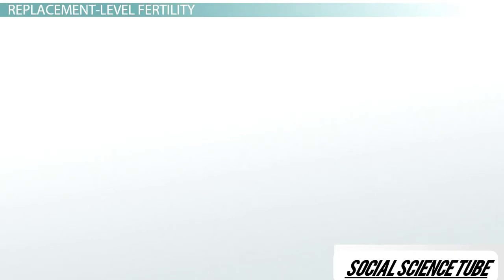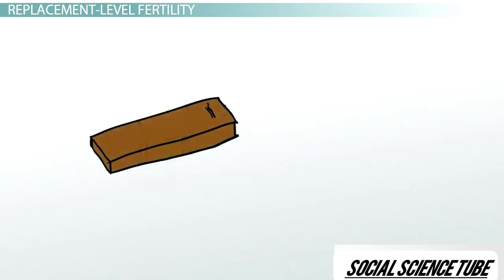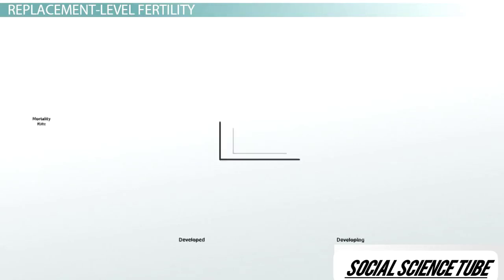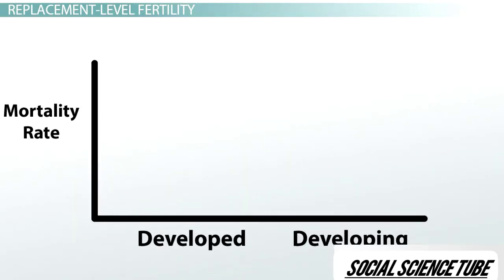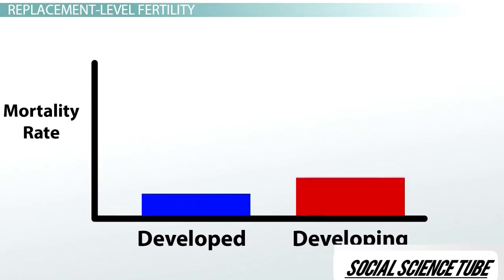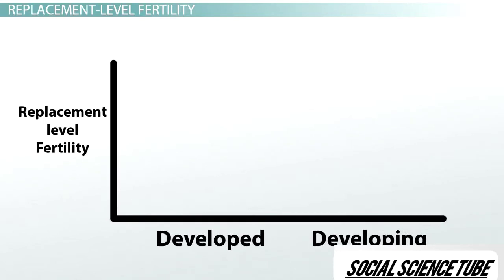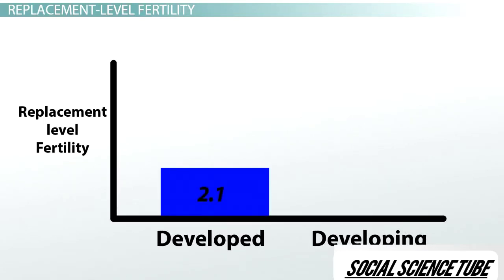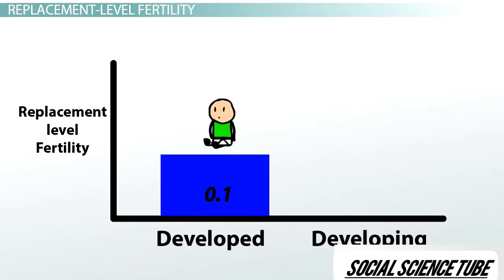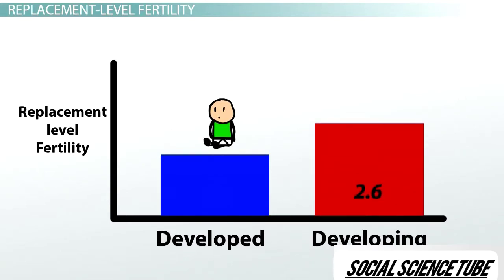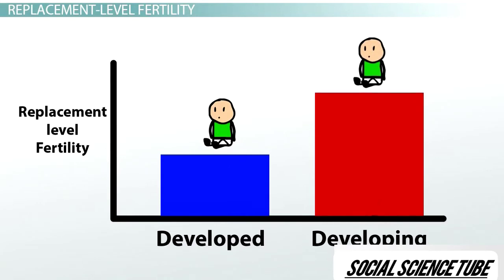Of course, the world is not ideal, and not all offspring that are born will survive to reproductive age and replace their parents. The replacement-level fertility rate is greatly impacted by the infant mortality rate, which is much higher in developing countries. On average, the replacement-level fertility rate is around 2.1 in developed countries — 2 children to replace the parents plus an additional 0.1 for the risk of a child dying before reproductive age. For developing countries, this number is slightly higher at around 2.6, with an additional 0.6 due to the higher risk of infant mortality.